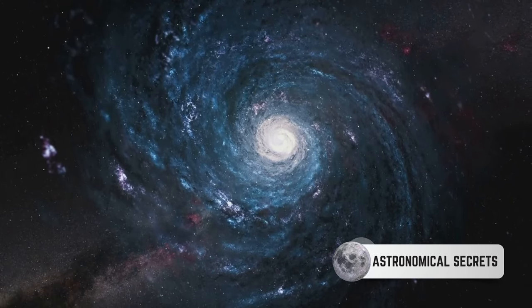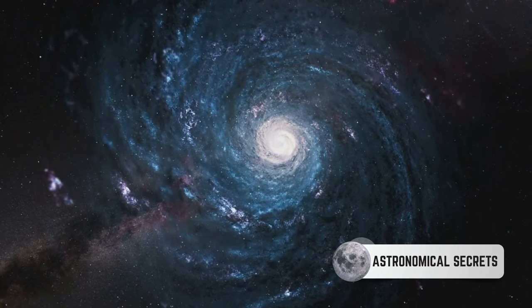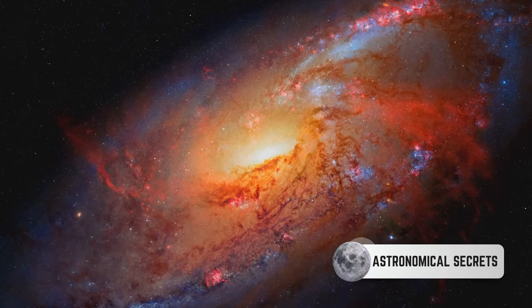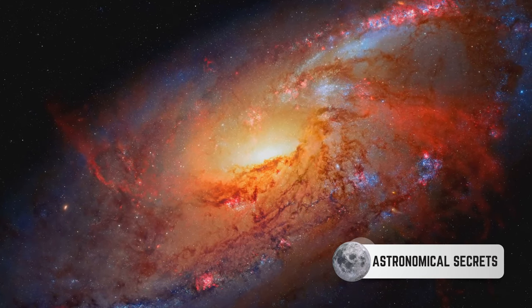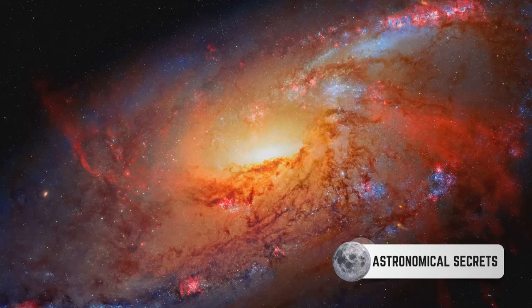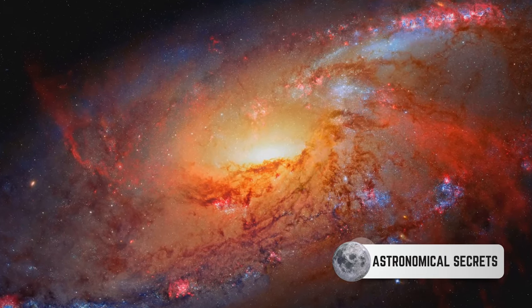Irregular galaxies are, as their name suggests, irregular in shape. They lack the symmetry and organization found in other galaxy types. While their lack of structure might seem chaotic, it's a testament to the diverse and dynamic nature of the universe.